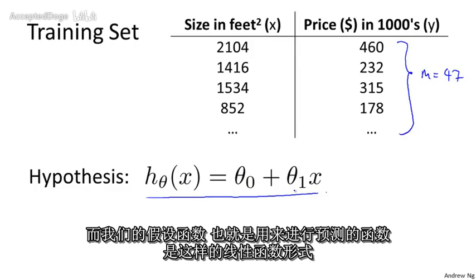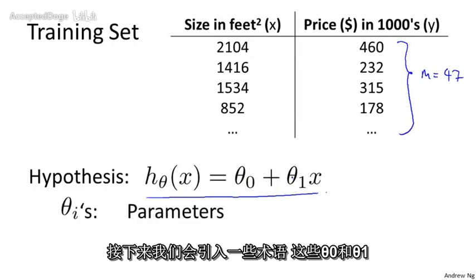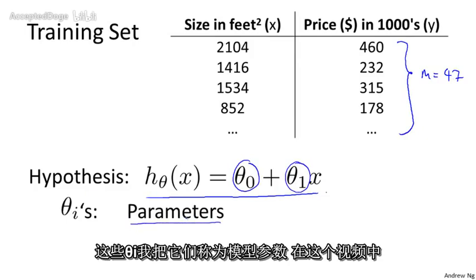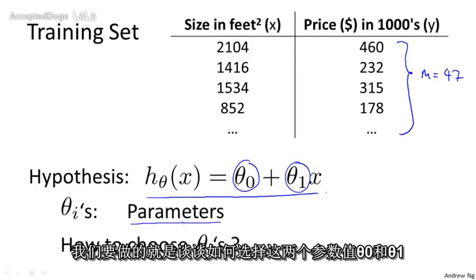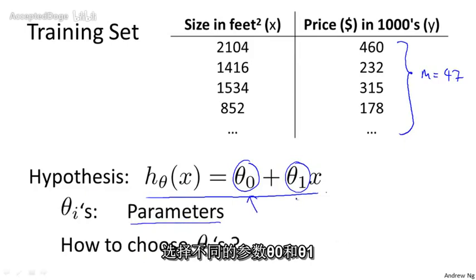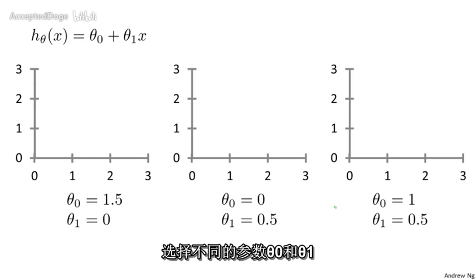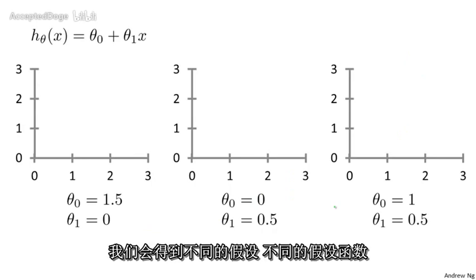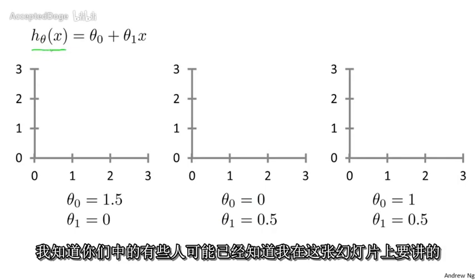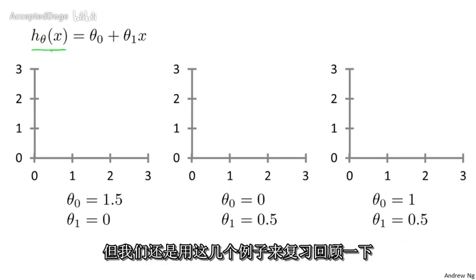To introduce a little bit more terminology, these θ₀ and θ₁, these θᵢ's are what are called the parameters of the model. And what we're going to do in this video is talk about how to go about choosing these two parameter values, θ₀ and θ₁. With different choices of the parameters θ₀ and θ₁, we get different hypotheses, different hypothesis functions. I know some of you will probably be already familiar with what I'm going to do on this slide, but just to review, here are a few examples.